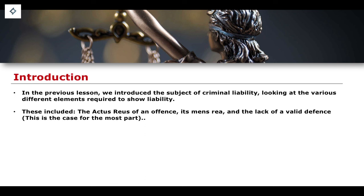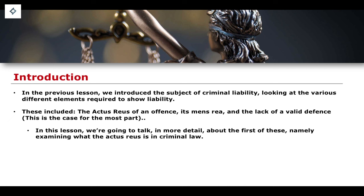So we talked, for example, about the idea of the Actus Reus in an offence, the idea of a mens rea, and the lack of a valid defence — being the most common equation for the establishment of criminal liability. I also prefaced the fact that we are going to talk about strict liability in more detail in future lessons, and so that skews the extent to which mens rea is particularly important in those particular offences.